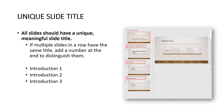Now let's talk about slide titles. All slides should have a unique, meaningful title. If multiple slides in a row have the same title, add a number to the end to distinguish them. For example, if your introduction is three slides long, call them Introduction 1, Introduction 2, and Introduction 3 — don't repeat the same title, because it's hard for a person with a visual impairment to navigate with their screen reading software.